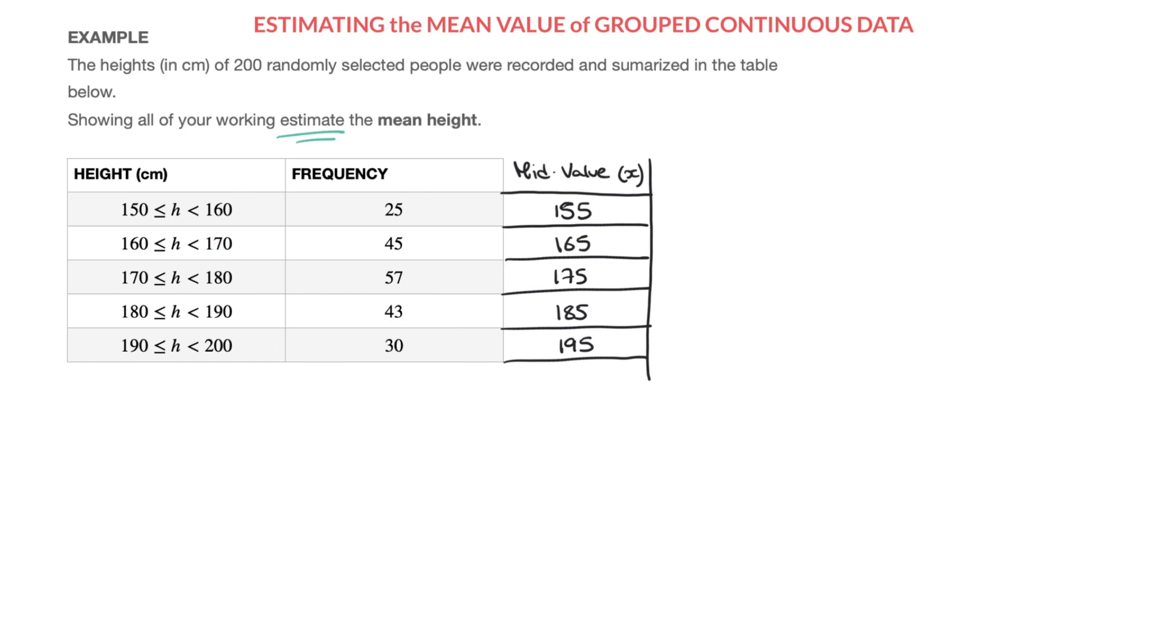And I'll take 195 as an example here, can always be found by calculating the average of the lower bound and the upper bound of the class interval. In other words, 195 could have been calculated as 190 plus 200 over 2. And by all means check, that's equal to 390 over 2, which is equal to 195.